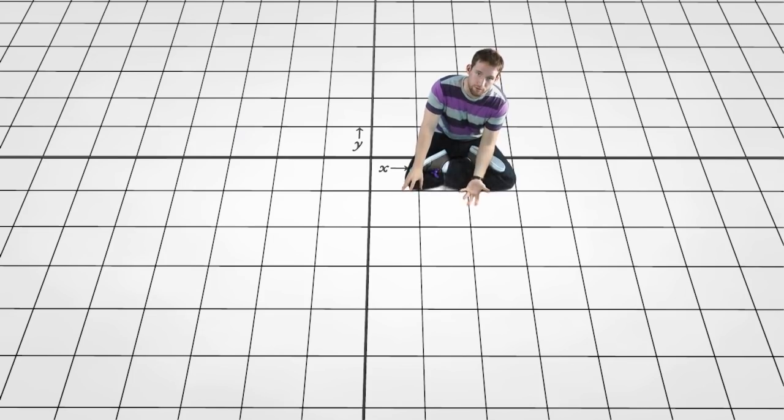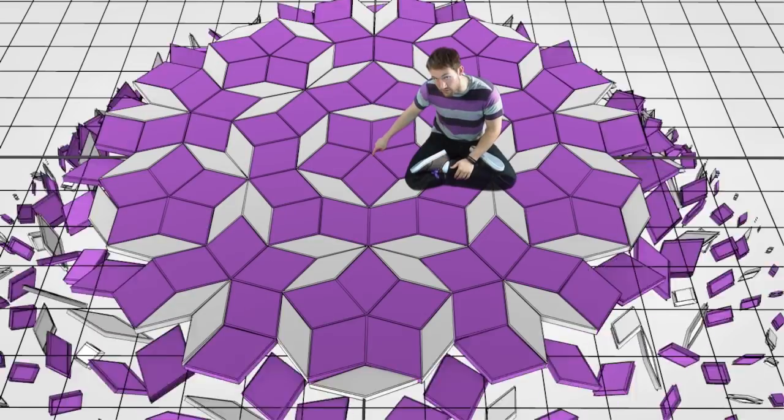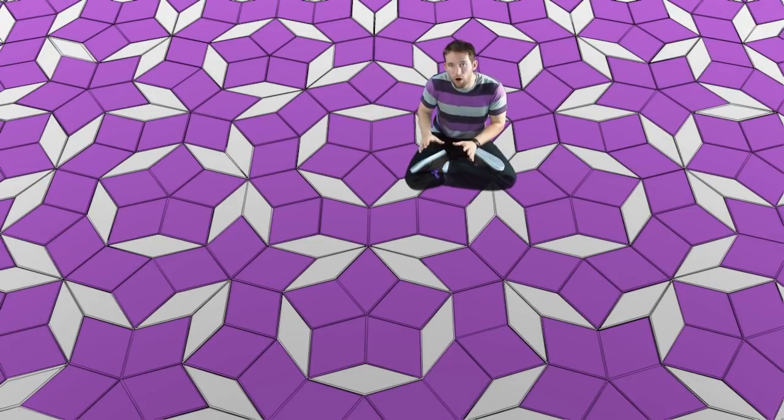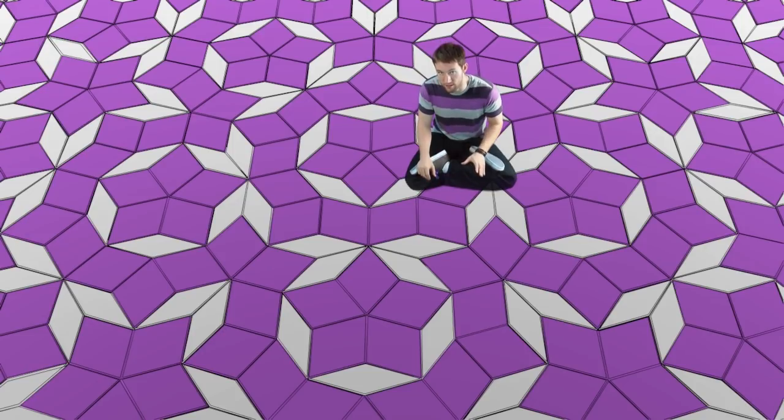So every repeating pattern is based on a regular tiling, but there are some patterns that don't repeat themselves. Irregular tilings, like this one, will go on forever, in all directions, without ever repeating themselves. These patterns are a lot less common, but they do show up from time to time.